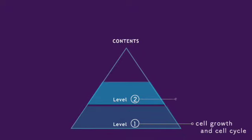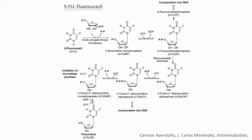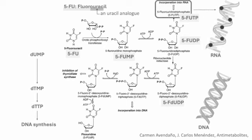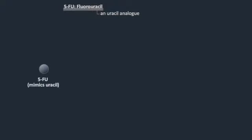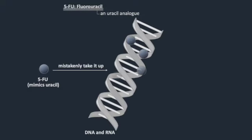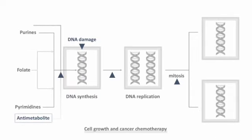Antimetabolites are a class of drugs that disrupt DNA synthesis. One standard example is 5-FU, also known as fluorouracil. Its molecular structure closely mimics that of uracil — think of it as a crafty imposter. Cells mistakenly incorporate 5-FU, disrupting their vital processes. Because 5-FU is not a perfect match, it hampers the functionality of DNA and RNA, resulting in impaired cell function and survival. It also inhibits DNA synthesis by engaging with a pivotal enzyme. Antimetabolites interfere with DNA synthesis in the S phase of the cell cycle.